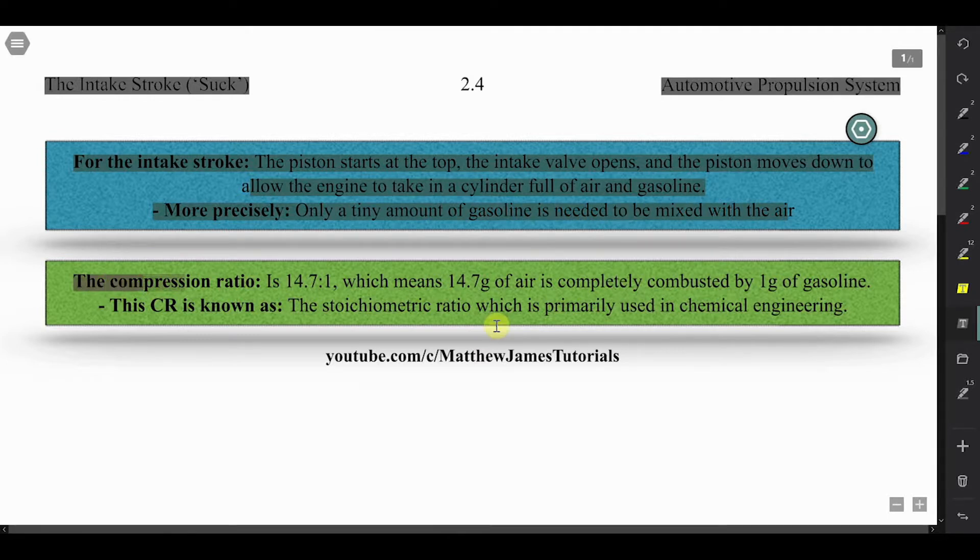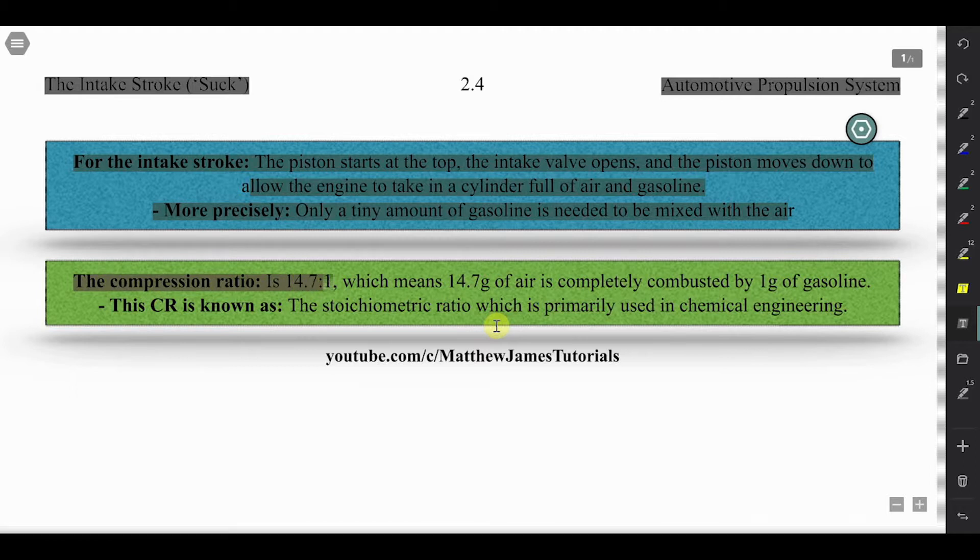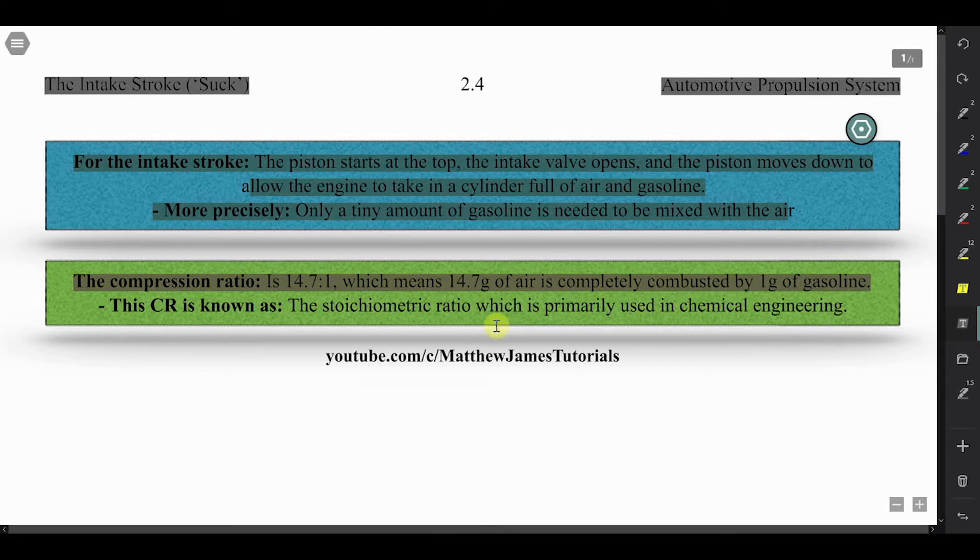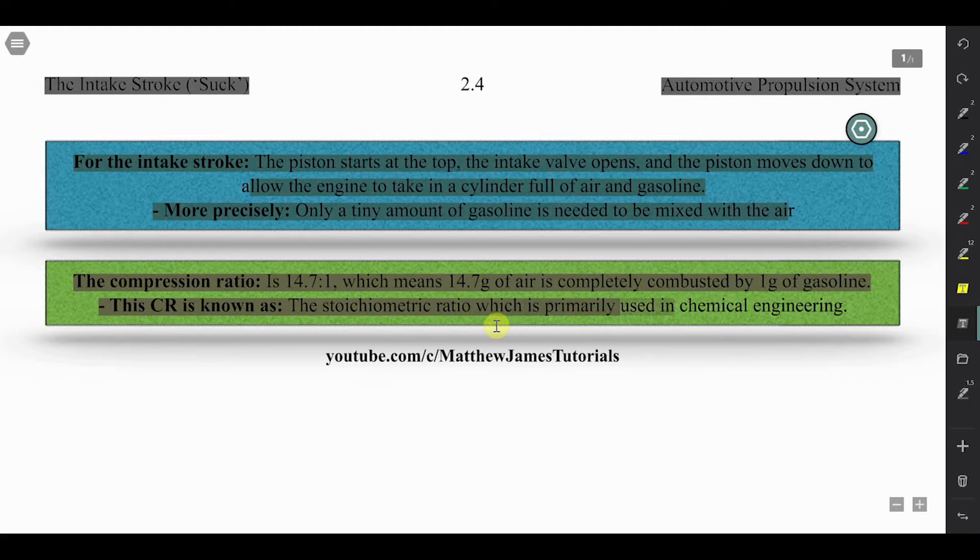The compression ratio is 14.7 to 1, which means 14.7 grams of air is completely combusted by 1 gram of gasoline. This compression ratio is known as the stoichiometric ratio, which is primarily used in chemical engineering.